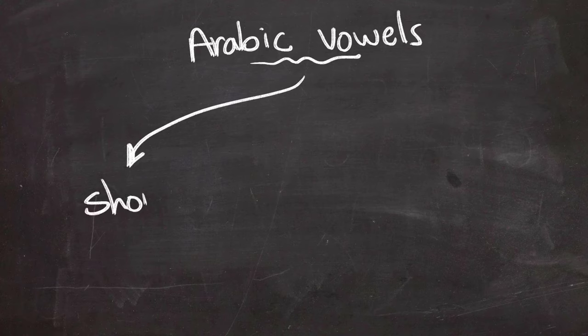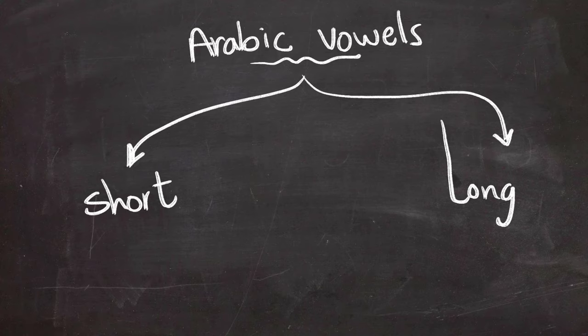Vowels in Arabic basically consist of two types, short and long vowels, much like any other language. Take English as an example.